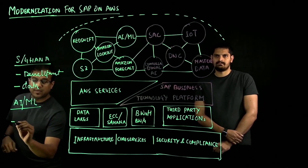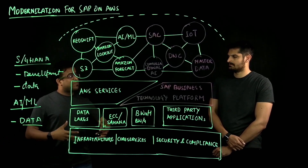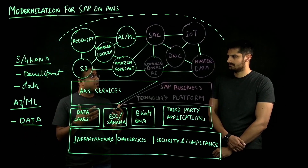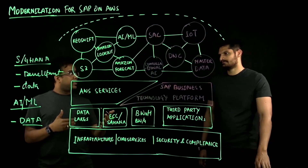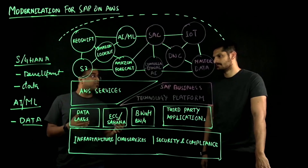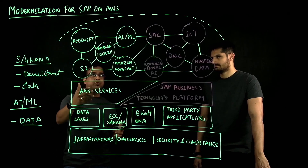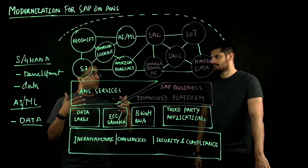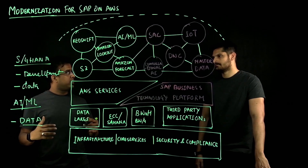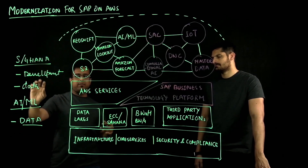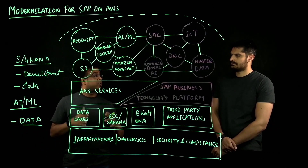The third aspect is data, which is another important part of innovating around the core — because you need data for intelligent decisions. Around data, customers can leverage BTP services like DWC and SAC, which run on AWS. Along with that, they can also utilize Redshift and S3 to create a more cohesive data lake solution. So customers can use all three aspects — S4 HANA journey, AI/ML, and data — for their business processes.